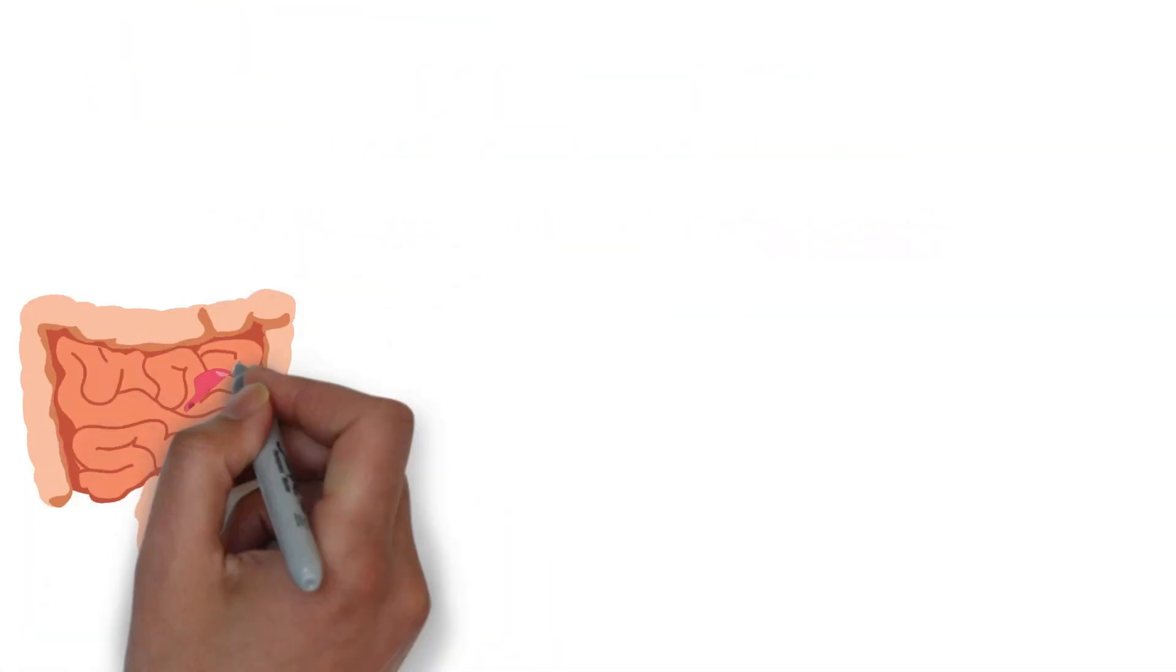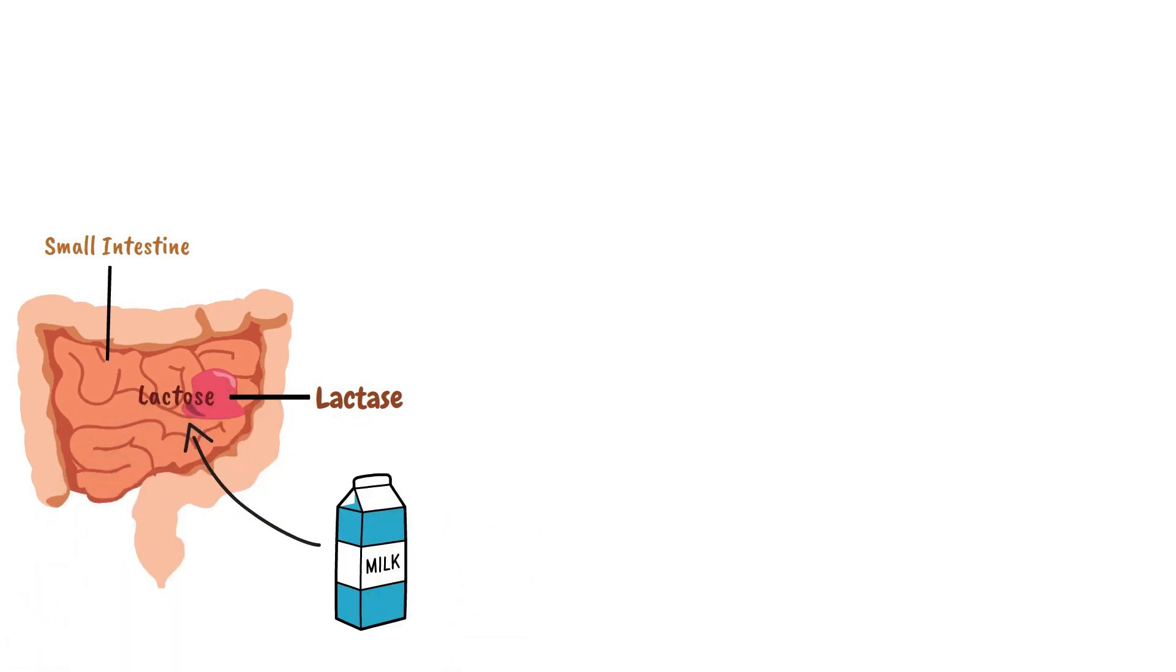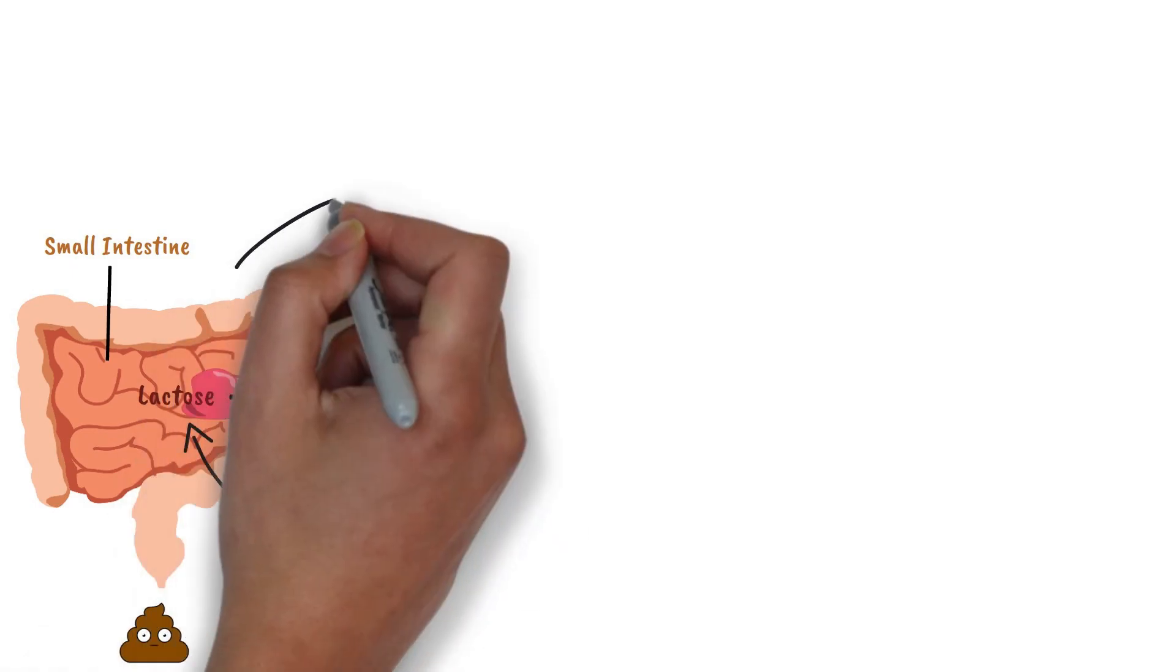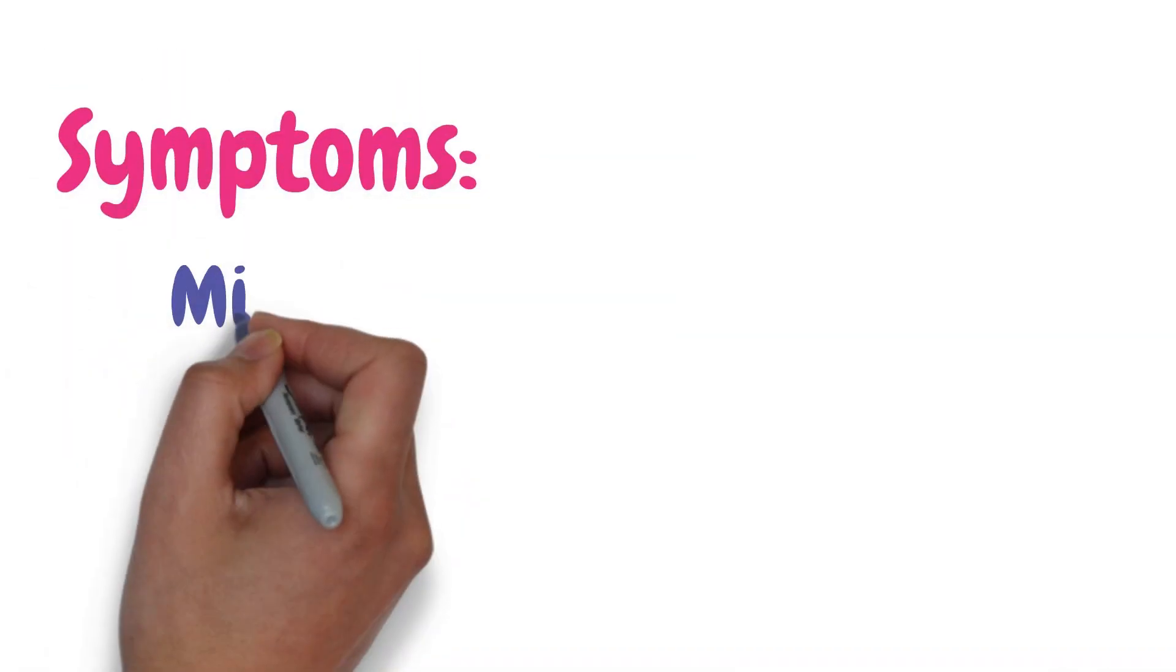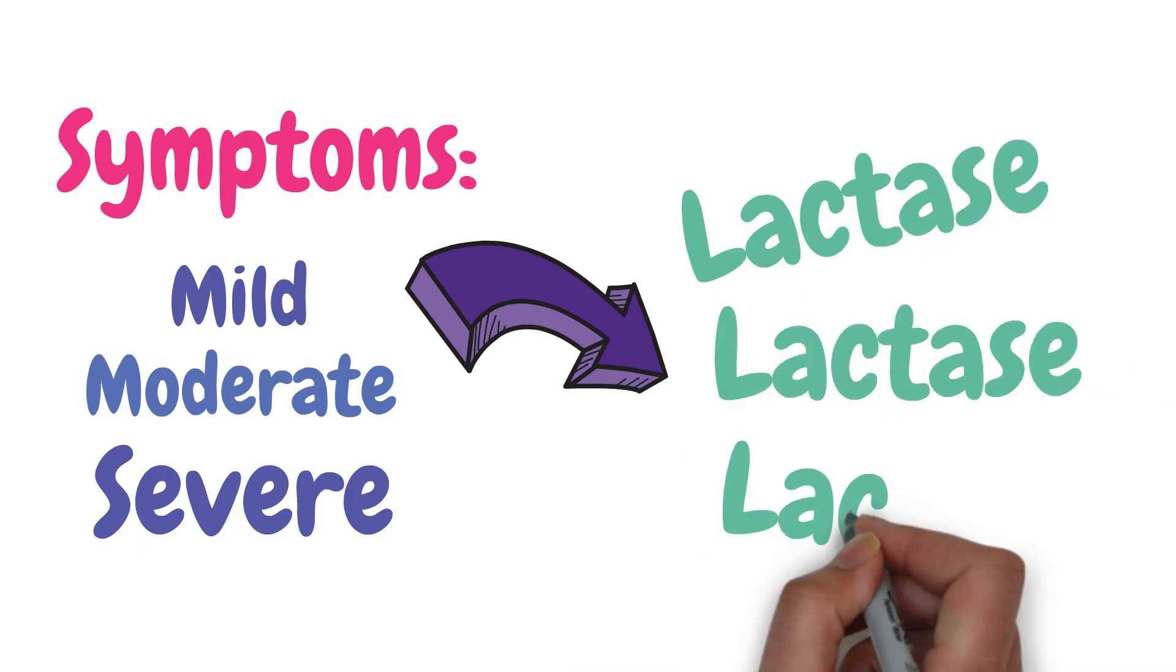Lactase is an enzyme in the small intestine that breaks down the sugar in dairy products. If your body does not make enough lactase, you may get diarrhea and an upset stomach when you eat or drink dairy products. You may have mild, moderate, or severe symptoms, depending on how much lactase your body makes.